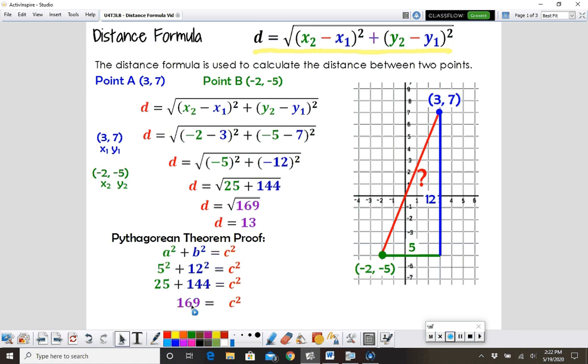We don't want c squared, we're going to take our square root. The square root of 169 is 13, positive or negative. But again, we're just talking distance.